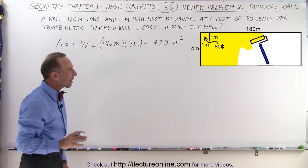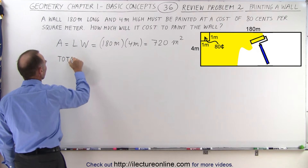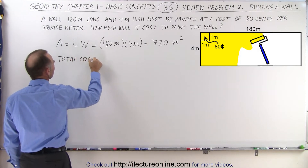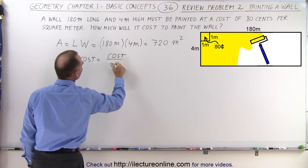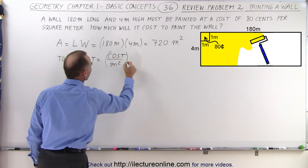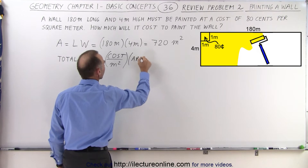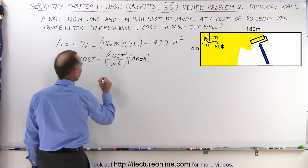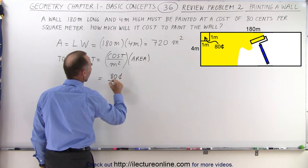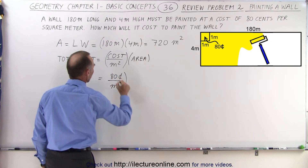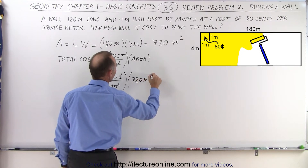Now we need to find the total cost. Total cost is going to be equal to the cost per square meter — the cost per unit area — times the total area. In this case, the cost per square meter is 80 cents per square meter, and we have a total of 720 meters squared.